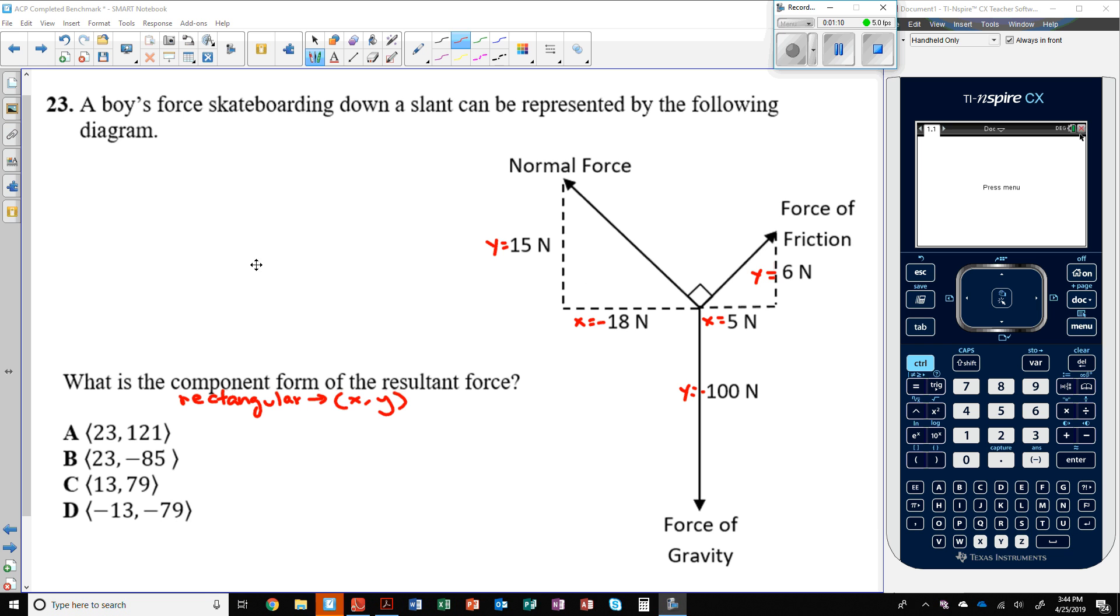We could write these out. This first normal force would be the vector. You could use these symbols, or as I normally do, since the calculator does, I'm going to use these. The normal force is negative 18 comma 15.